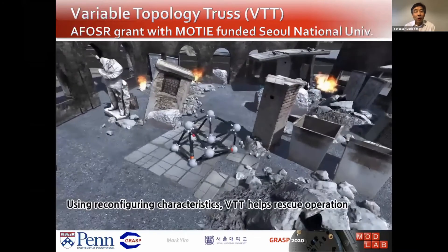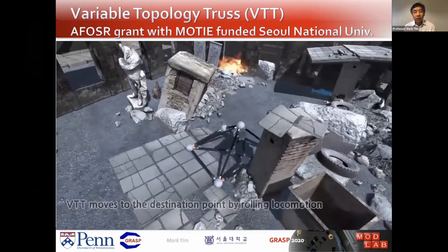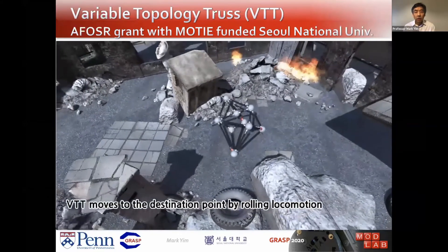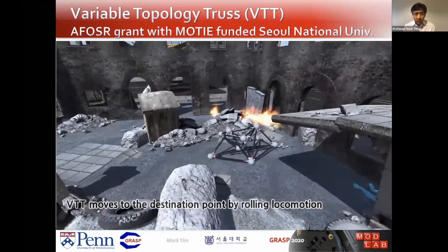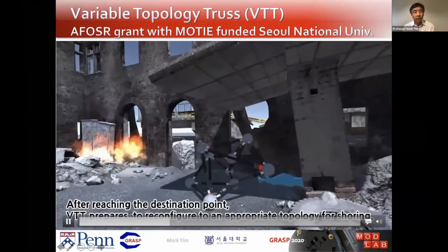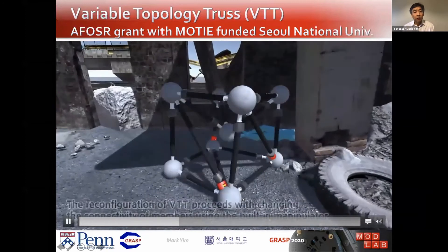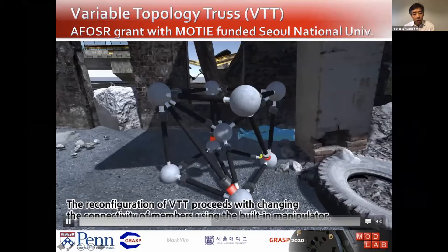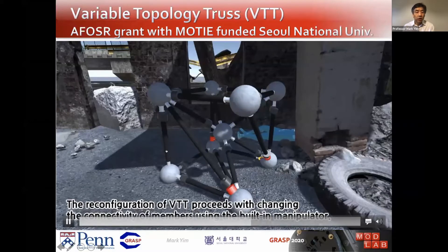This is the goal for what we call the variable topology truss, which is a joint effort between Penn and Seoul National University. This is a simulation that one of the students at Seoul National University came up with. Basically, we want to make something like this — a variable geometry truss in which the truss members can change their length, but also the topology of the truss system can change as well.